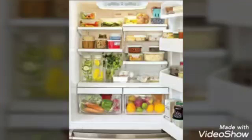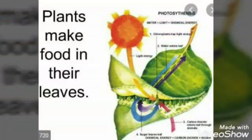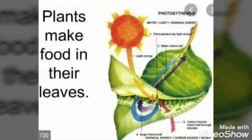Children, where does Mama cook the food? Mama cooks the food in the kitchen. We eat this food and we get energy to grow. Leftover food is stored in the refrigerator. What about plants? Do they need food? Where do they get food from? What do they do with the leftover food? Plants prepare their own food. Food is prepared in their leaves. Some of this food is used up by plants, and the leftover food is stored in different parts of the plant.